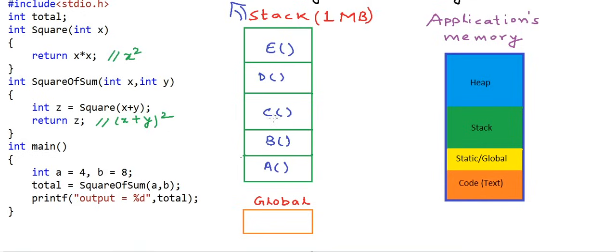for example, if method A calls B, B calls C, and we go on calling and exhaust the whole space reserved for the stack, then this is called stack overflow, and in this case our program will crash. One common case of stack overflow is when you write a bad recursion and your program goes infinitely into recursion.